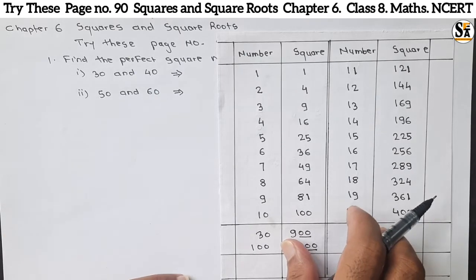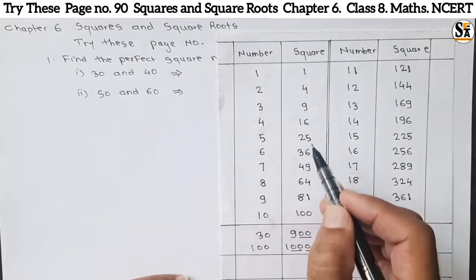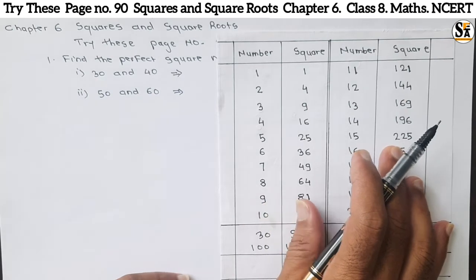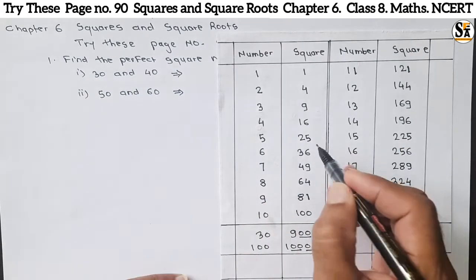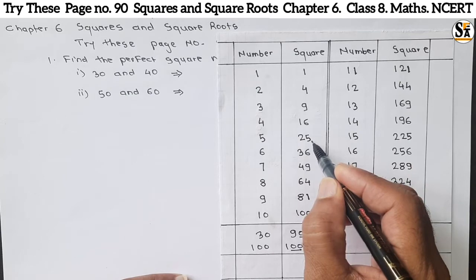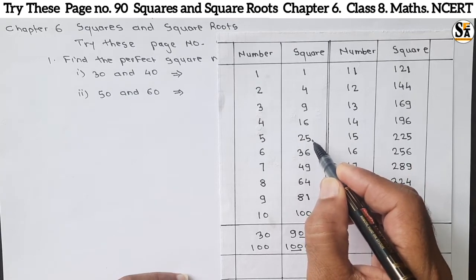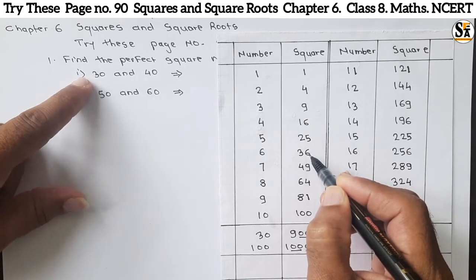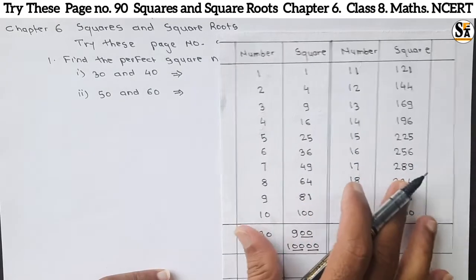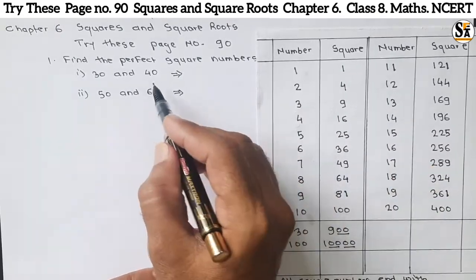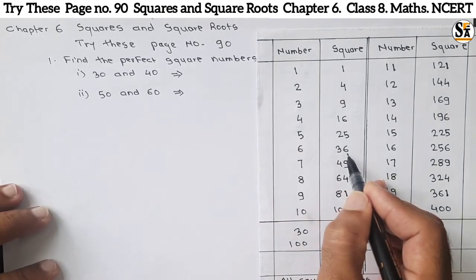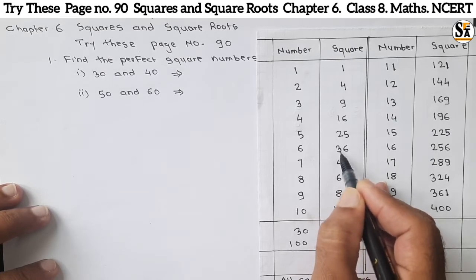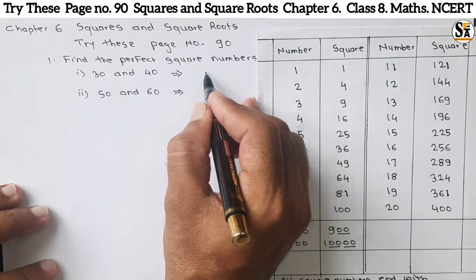From the chart, see where 30 and 40 are. There is no direct 30 or 40, but we have to find the perfect square number in between 30 and 40. We can see 25 is below 30, and 36 is more than 30 but less than 40. So between 30 and 40, the number 36 is there. Since 25 is below 30 and 49 is above 40, only 36 is the answer.